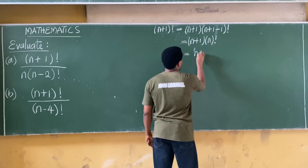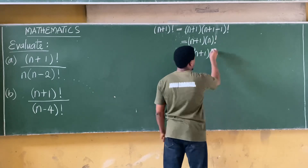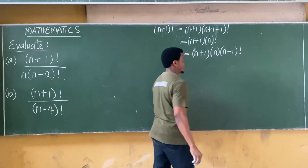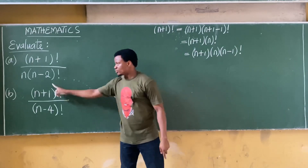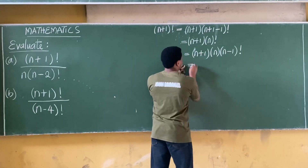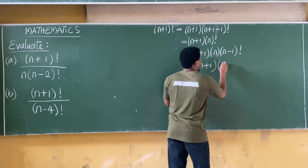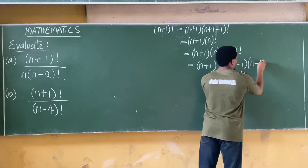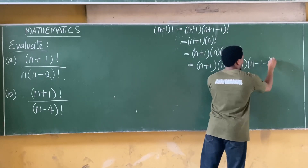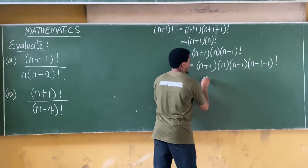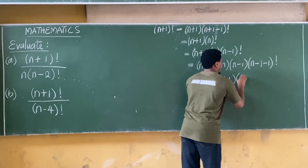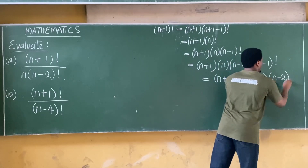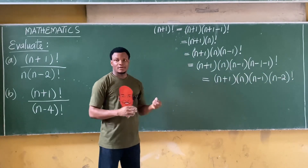Continuing, n factorial becomes n into n-1 factorial. We keep subtracting since we're looking for n-2. The next step becomes n+1 into n into n-1, then subtract one more to get n-1-1, which is n-2 factorial. So we now have n+1 into n into n-1 into n-2 factorial.